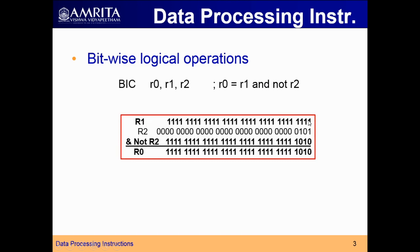Let us take R1 equal to all ones. Suppose I need to clear only the 0th bit and the 2nd bit — bit numbering starts from 0, 1, 2, 3, etc. So I need to clear only the 0th bit and the 2nd bit of R1 using BIC. For R2, you should select it so that only those two corresponding bits in R2 are 1, and all the other bits are 0. Whichever bits you need to clear, the corresponding bit in R2 should be 1, all other bits 0.